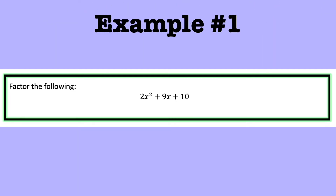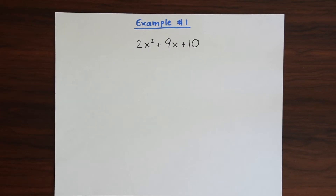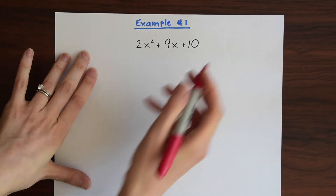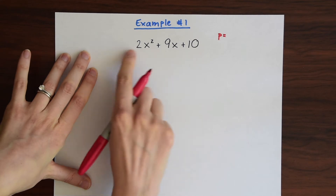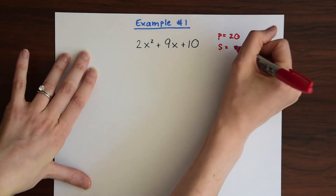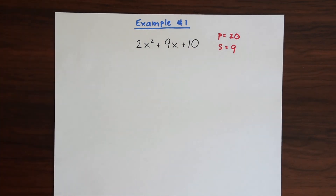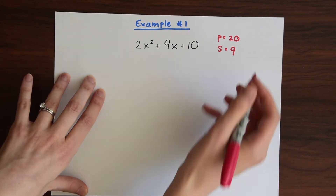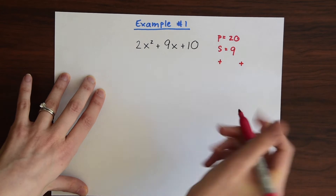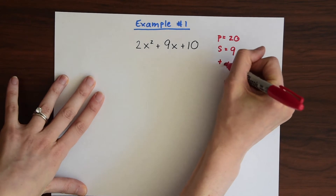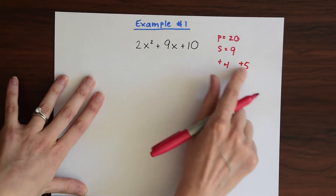We have 2x squared plus 9x plus 10. The first thing we're going to want to do is start out doing product sum like we would with any other quadratic equation. Notice we have a is greater than 1 here. So our product is equal to a times c, which is 2 times 10, which is 20. Our sum is equal to 9. We want to find 2 numbers that multiply to 20 and add to 9. Right away I can see that 4 and 5 are our factors because 4 times 5 is 20 and 4 plus 5 is 9.